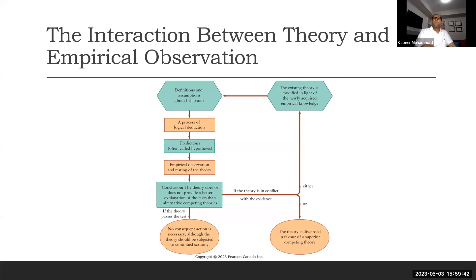This hypothesis or prediction is our statement which we want to prove. Then we use data or collect data to prove this hypothesis is true or not true. Empirical analysis or observations and testing of the theory. After that, we conclude that the theory does or does not provide a better explanation of the facts than alternative competing theories.